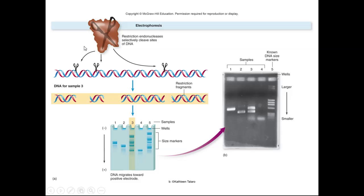We take our restriction endonuclease, chop up our DNA molecule into different sizes and pieces, and then insert that into a well. Each different well is going to have a different DNA sample or be chopped up by a different restriction endonuclease. It's also important that we have a frame of reference — known as the ladder — typically on one of the ends of our gel. We then run the electric current through the gel. In sample one we have a larger band, in sample two a smaller band, in sample three a small, medium, and really large band, and in sample four just a very large band. The DNA ladder gives us our frame of reference so we can know how big or small these molecules are.